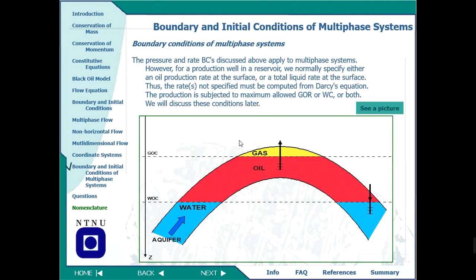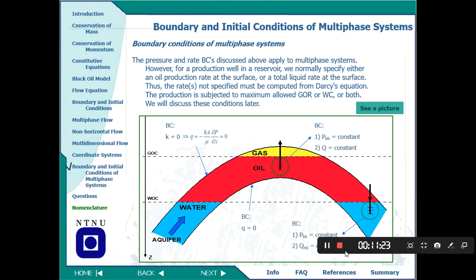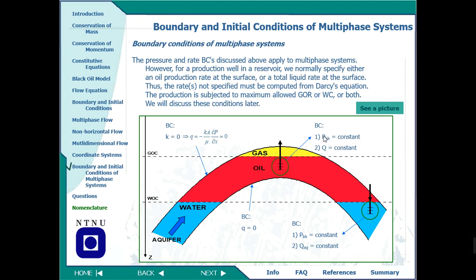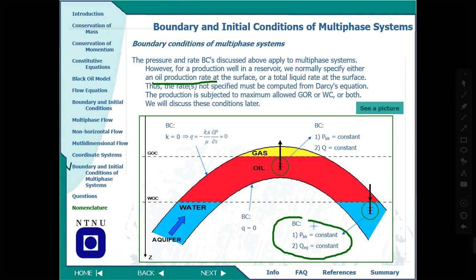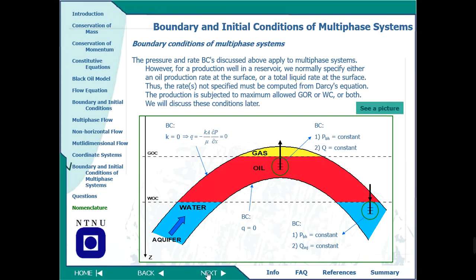For multi-phase flow boundary conditions, when we have oil wells the initial conditions are described in terms of pressure and flow rate. Conditions are found by producing the well at given oil production rates, which define the initial conditions. Water boundary conditions are also defined initially and at the final stage. The key idea is that initial and boundary conditions for multi-phase flow are defined in terms of oil production rates at surface or the total liquid rate.